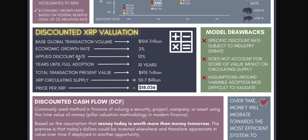So how does this valuation actually work? We started with the assumption of global GDP being at $104 trillion, applied the Fed's growth rate of two percent, applied the discount rate, and assumed 10 years to adoption. This brings us to a total transaction present value — in today's valuation — of $915 trillion. Using a circulating supply of about 50 billion XRP, that brings us to a price per XRP of $18,000.